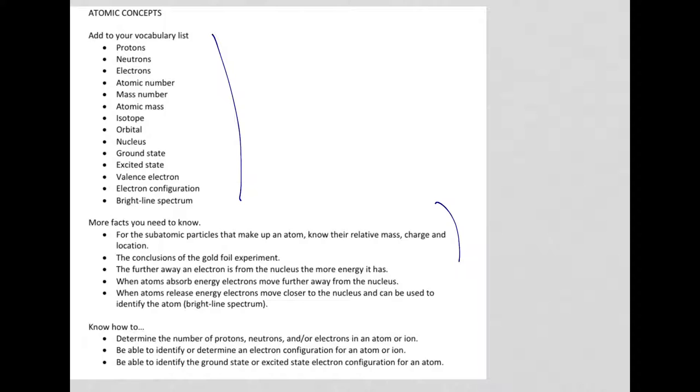Of course, the further away an electron is from the nucleus, the more energy. Atoms absorb energy and the electrons move further away. When they drop back down, we get the energy that's released and we can identify the atom based on a bright line spectrum. Know all of that pertaining to ground state and an excited state.